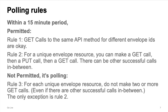DocuSign encourages developers to use the Connect Webhook system to receive envelope status change notifications from DocuSign. The alternative of your application polling DocuSign for status changes is available, but only in accordance with the polling rules.